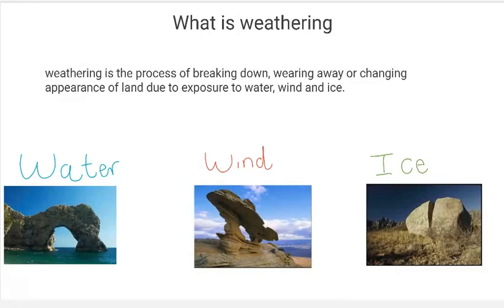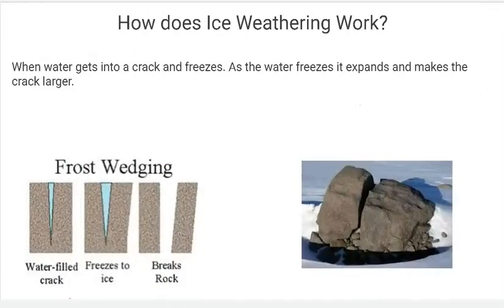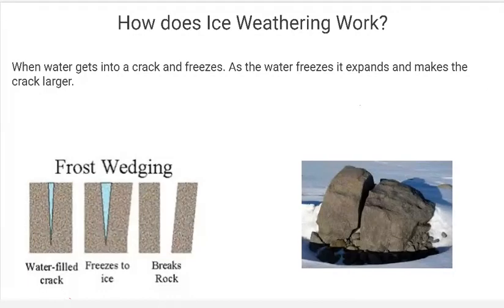Ice is really interesting because it actually has two different types of weathering, or ways it weathers rocks and other surfaces of earth over time. The first one is called frost wedging. Frost wedging is when water gets into a crack and freezes. And as the water freezes, it expands and makes the crack larger. This doesn't just happen once — not one instance of water getting in, freezing, and breaking it up.